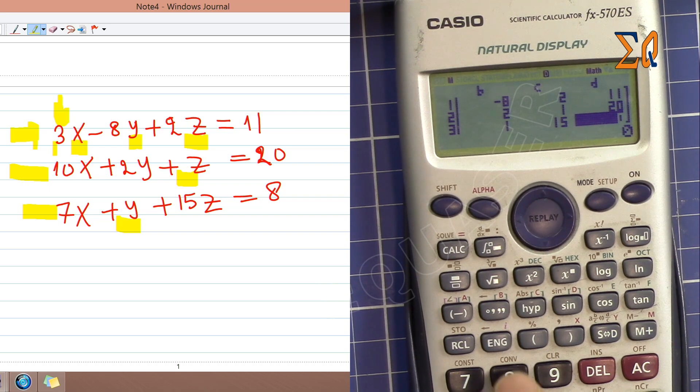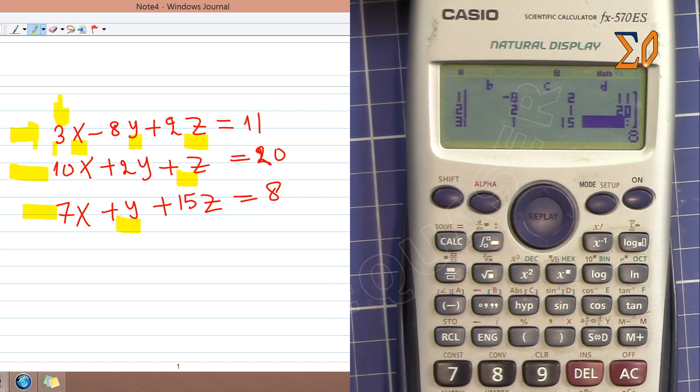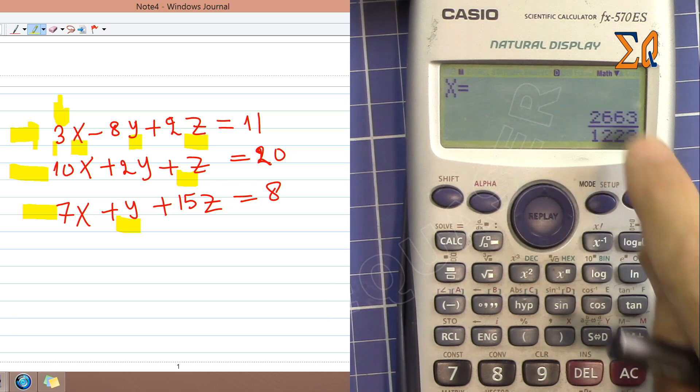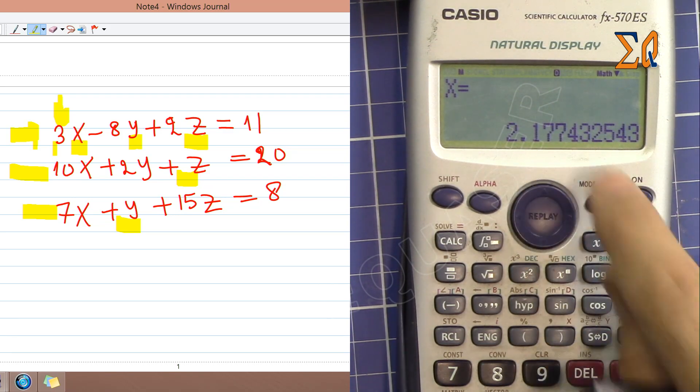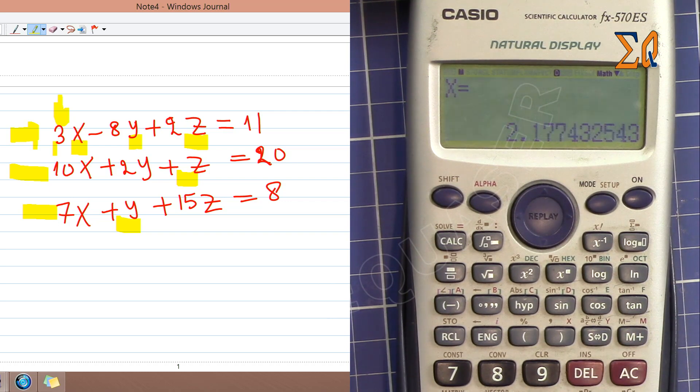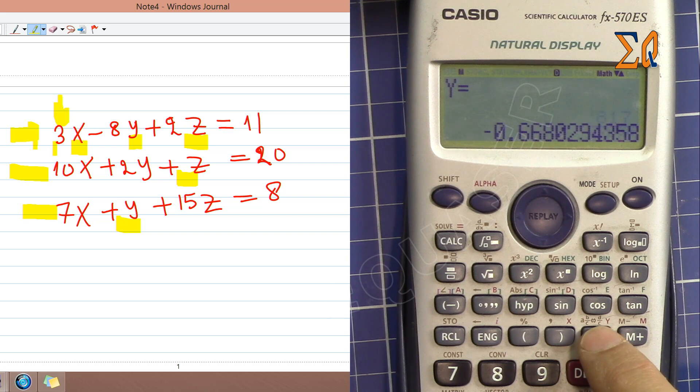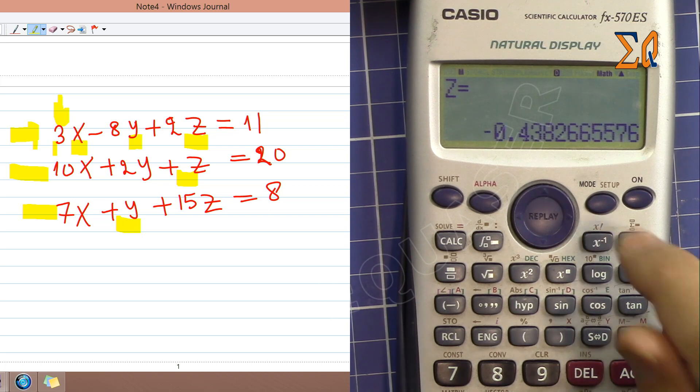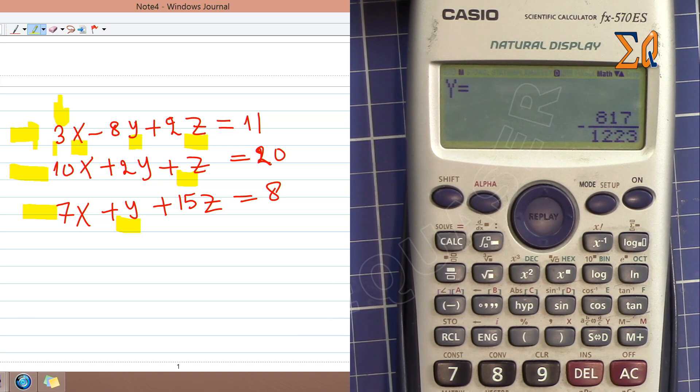Once you enter all the values, just press equal sign. This is the value for x. If you don't like this, just press this button to convert it to decimal. I'm pressing equal sign to get y, which is minus 0.668. Then equal sign again, and that's for z. If you want to scroll the values, just go up and down.